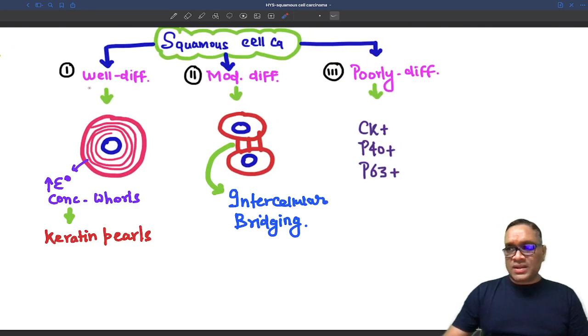So Squamous Cell Cancer we can divide into three grades: well differentiated, moderately differentiated, or poorly differentiated. What is the difference?